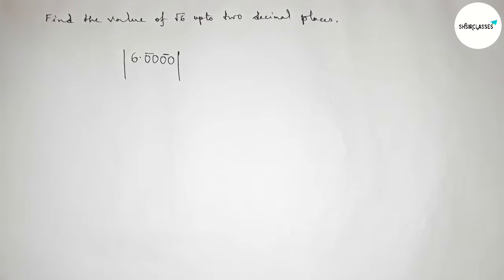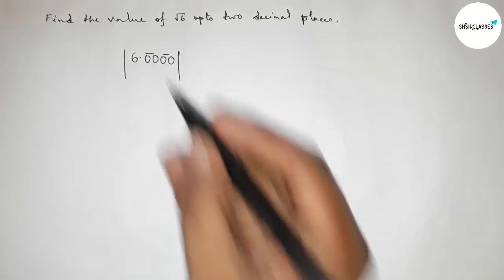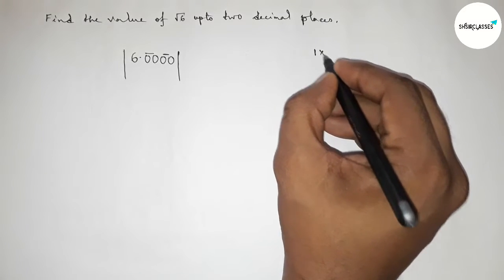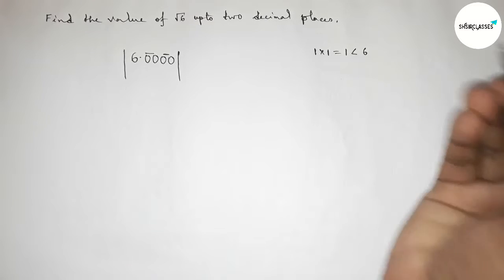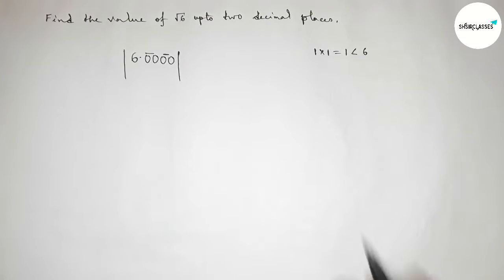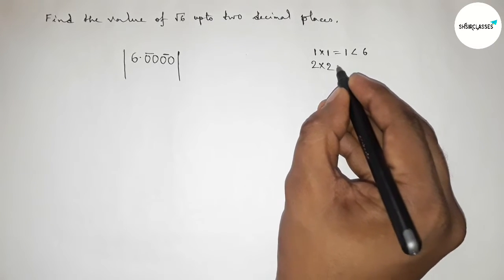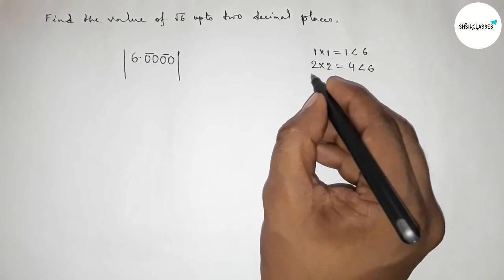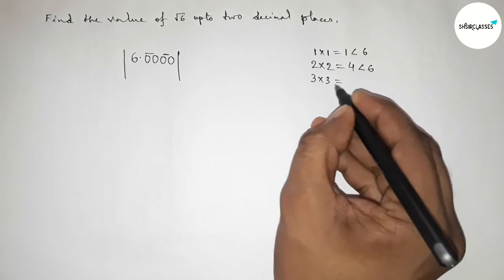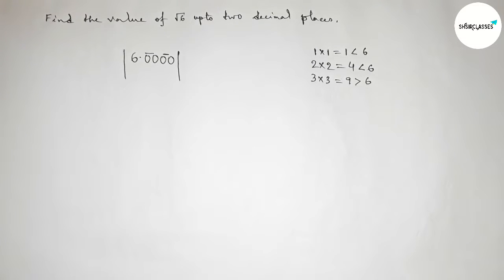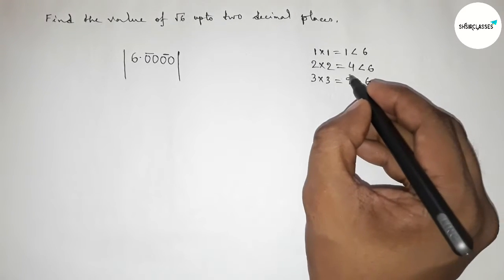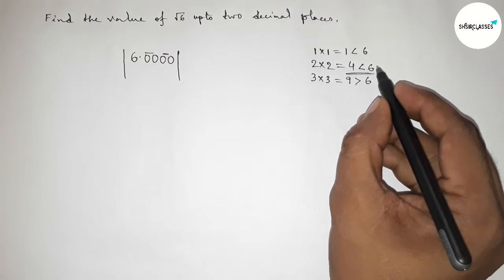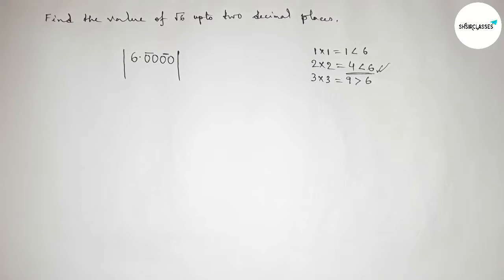Now an important thing: we have to choose a number and multiply it by itself, which gives a result less than and almost near 6. Taking 1: 1×1=1, less than 6. Taking 2: 2×2=4, less than 6 and almost near 6. Taking 3: 3×3=9, which is greater than 6. So 4 is almost near and less than 6, so we should take 2.